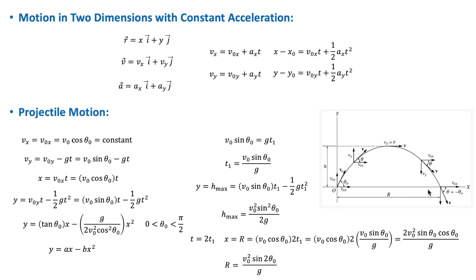Projectile motion is just like free fall in that the object moves under gravity alone and air resistance is neglected. The difference is that the velocity of the object has both an x component and a y component, instead of a y component alone as in free fall. Because of the x component of velocity, the object follows a curved parabolic path.